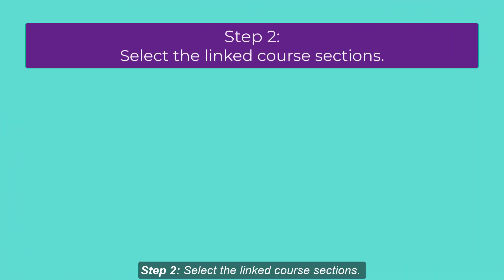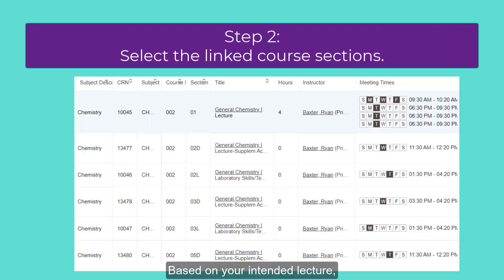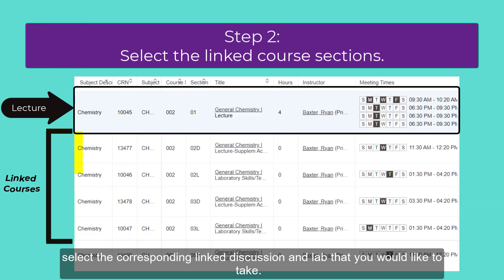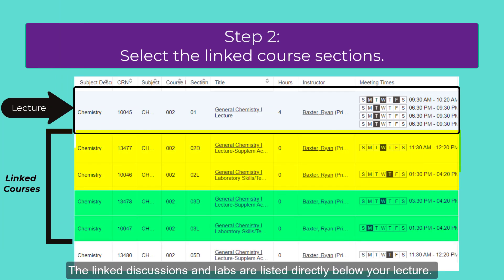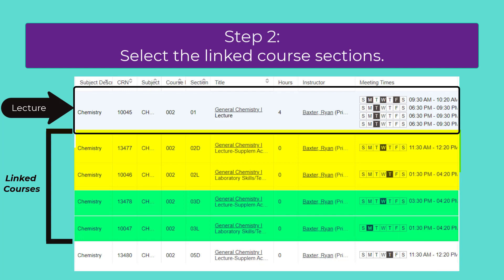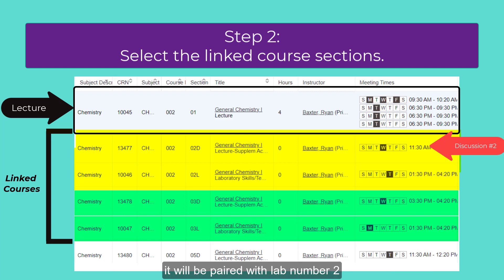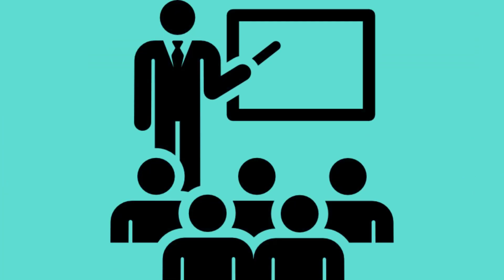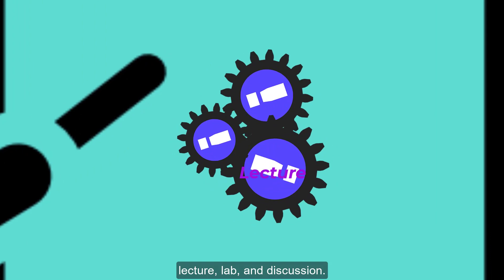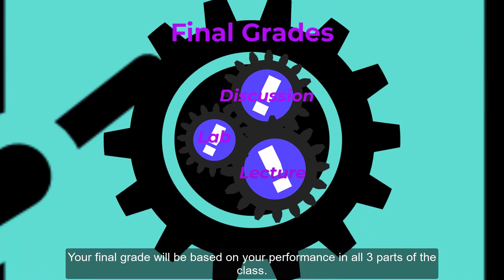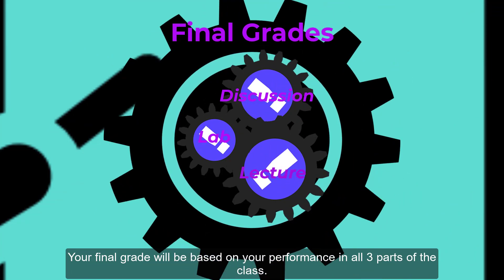Step 2: Select the linked course sections. Based on your intended lecture, select the corresponding linked discussion and lab that you would like to take. The linked discussions and labs are listed directly below your lecture. For Chem 2 and Chem 10, the linked courses are paired together, meaning that if you select discussion number 2, it will be paired with lab number 2. You must attend all parts of your chemistry class — lecture, lab, and discussion — as your final grade will be based on your performance in all three parts.